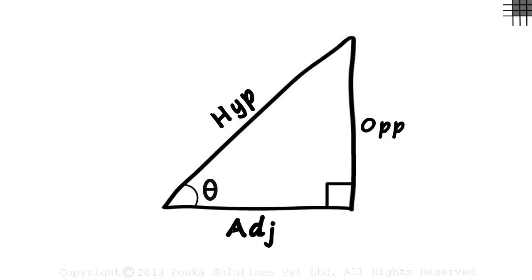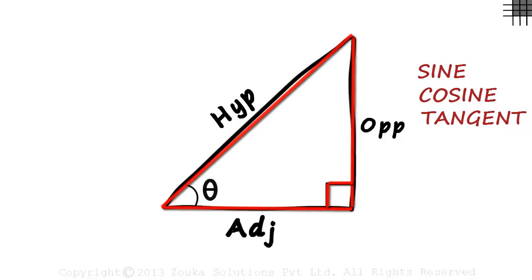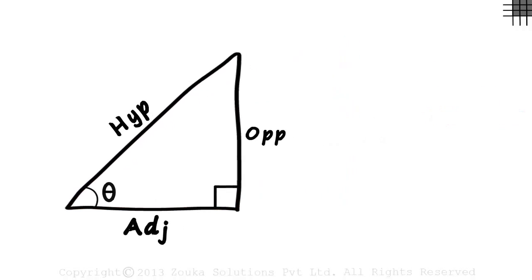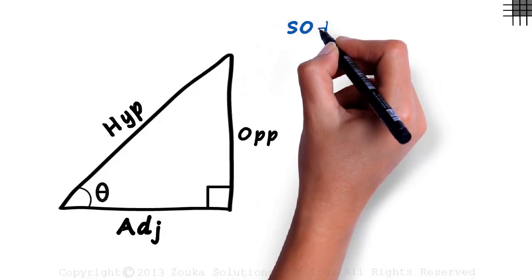We learned the formulas of the sine, cosine, and tangent functions using this right triangle. The code we use to remember the formulas is SOH-CAH-TOA.